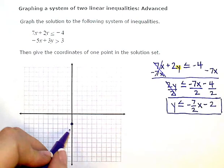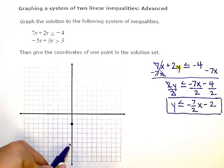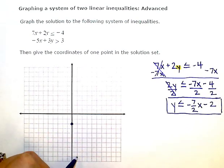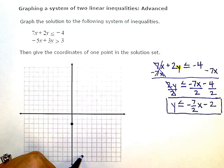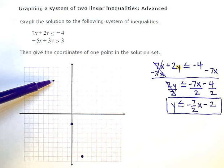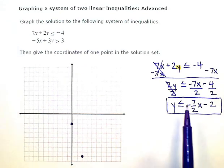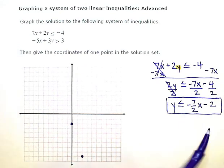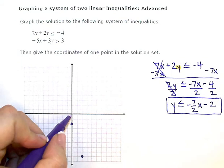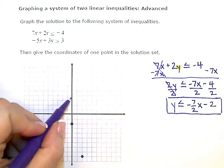So down 7, 1, 2, 3, 4, 5, 6, 7 over 2. Gives me a dot right there. Now I want another dot up here. So I'm going to reverse this and go up 7, back 2. So up 7, backwards 2. And give myself at least one more dot.